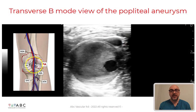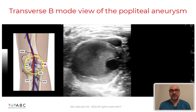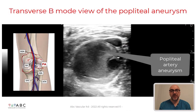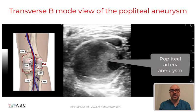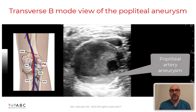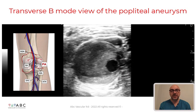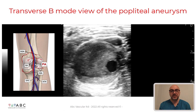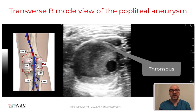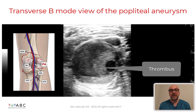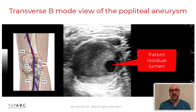Starting at the level of the popliteal fossa with the transducer in transverse view and B-mode, we can appreciate a large aneurysm of the popliteal artery which involves all segments of the artery. We can also note the presence of significant mural thrombus and we can identify a small patent residual lumen.